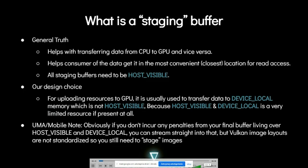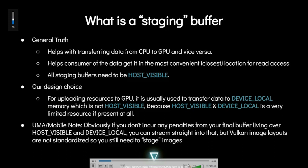First, let's talk about what is a staging buffer. It helps with transferring data from CPU to GPU and vice versa. It helps consumers of the data get to the most convenient location for read access. All staging buffers need to be host visible because the CPU either needs to write to it or read from it. Our design choice was for uploading resources to GPU — the staging buffer is usually used to transfer data to device local memory, which is not host visible, because host visible and device local is a very limited resource if it's present at all.